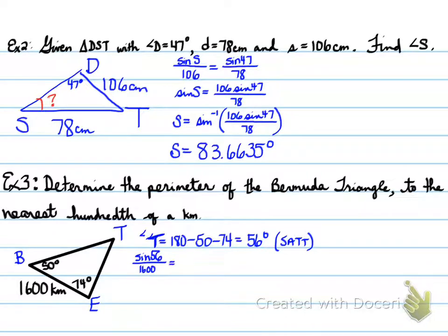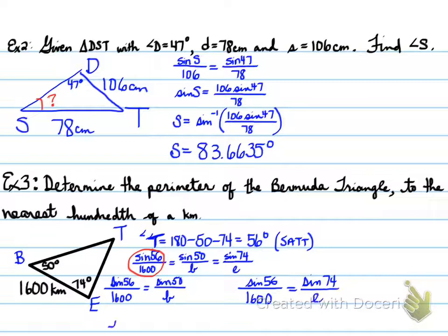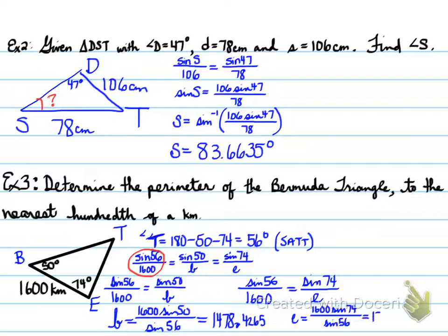We use sine 56 over 1600 equals sine 50 over b, which equals sine 74 over e. Perimeter means adding all the sides together, so we need little b and little e, both of them. We solve for b using sine 56 over 1600, and we use the same to solve for little e. Cross multiply and solve, and you find these values.